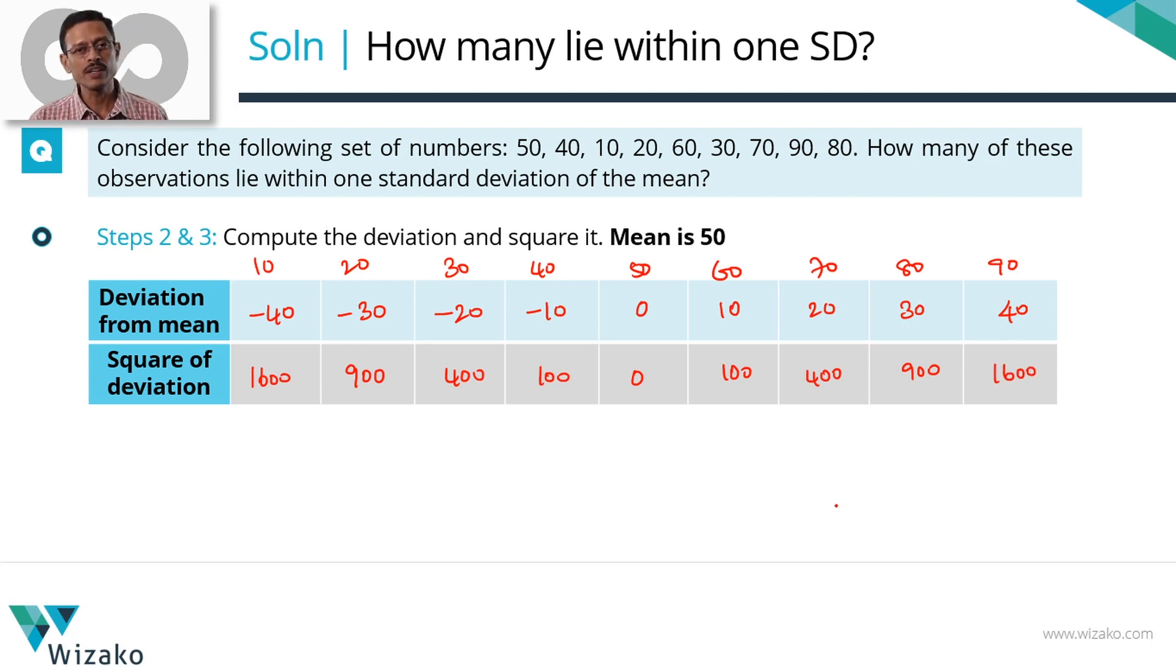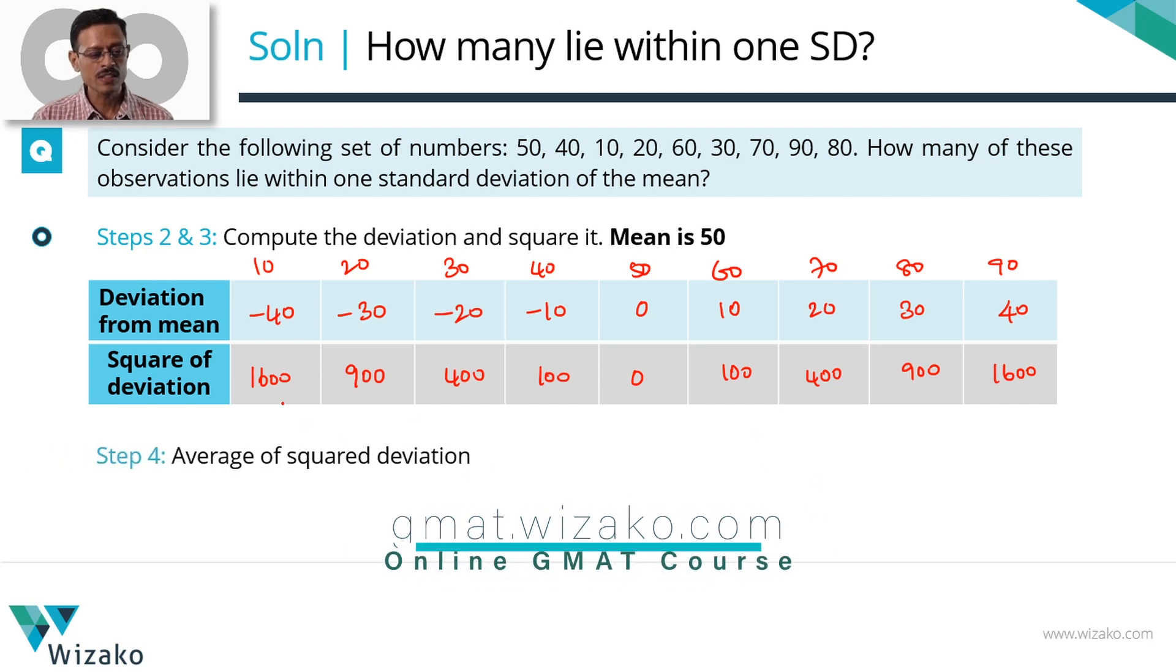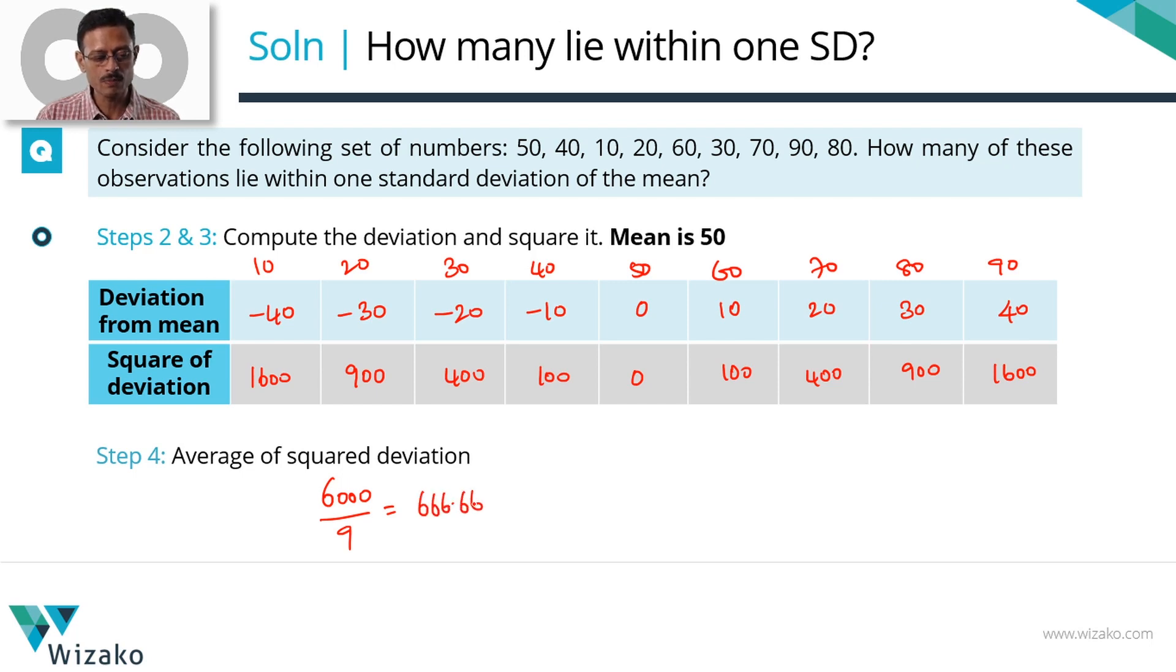Next step, step 4 is computing the variance which is the average of the squared deviation. So let's compute the sum first. 1600 plus 900 is 2500 plus 500, 3000. The pattern is repeated here. 3000 plus 3000, 6000 is the sum of the squared deviations divided by 9 elements. So this is equal to 2000 by 3 which is nothing but 666.66.